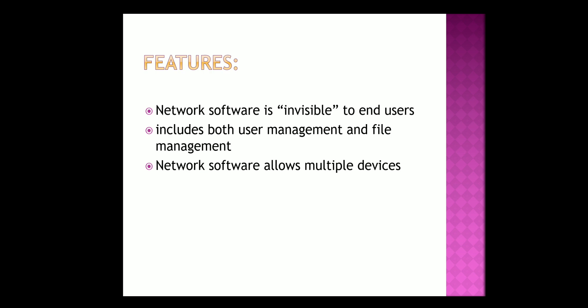The next topic is the features of network software. Network software is not the same as software applications; the former exposes the inner workings of the network or abstracts administration. While software applications enable end users to perform specific tasks, network software is invisible to end users — it is used to facilitate access to network resources in a seamless way. The basic functions include both user management and file management. User management enables administrators to add or remove users from the network. File management allows administrators to define the location of data storage and user access to the data. Network software also allows multiple devices such as desktops, laptops, mobile phones, tablets, and other devices to connect to one another as well as to other networks.